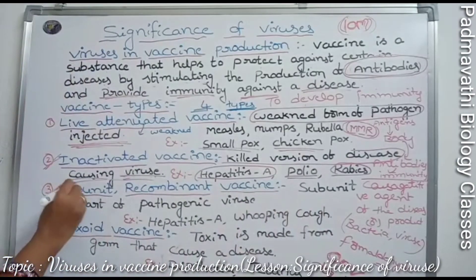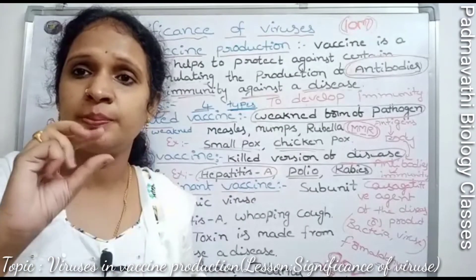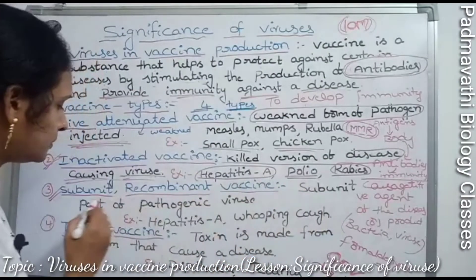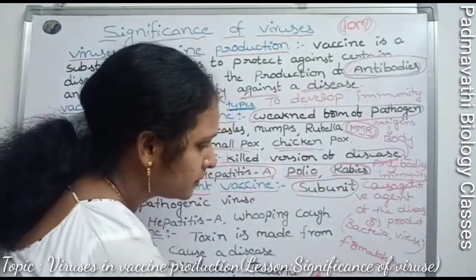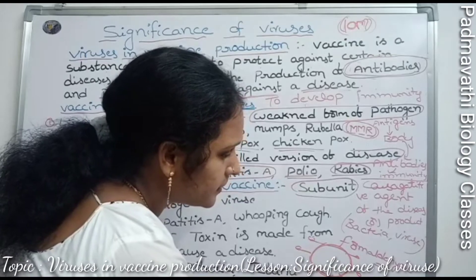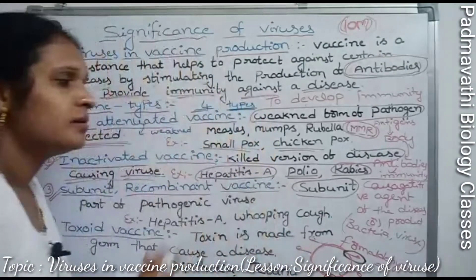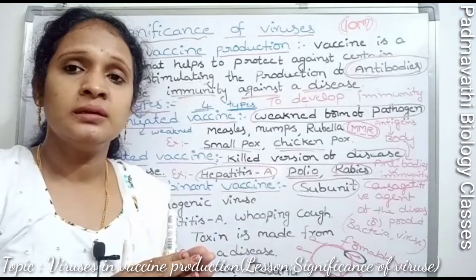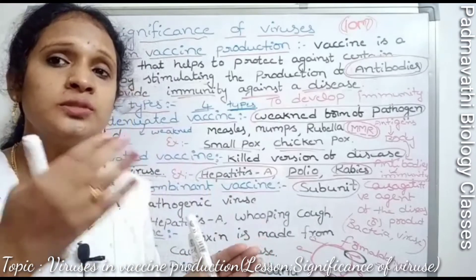The third type is the subunit recombinant vaccine. Subunit means small, specific pieces of the pathogen are used. For example, in coronavirus (COVID-19), a specific part of the virus structure is taken and used in vaccine production.